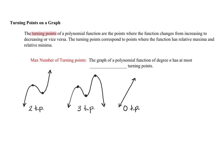Now that we know what a turning point is, let's talk about the maximum number of turning points by looking at the graphs we've created and discussing their degree. The first graph has ends pointing in opposite directions — an odd degree polynomial, possibly degree 3 — and it has two turning points. The next polynomial has ends pointing in the same direction — an even degree, possibly degree 4 — and it has three turning points. It looks like the number of turning points is one less than the degree.